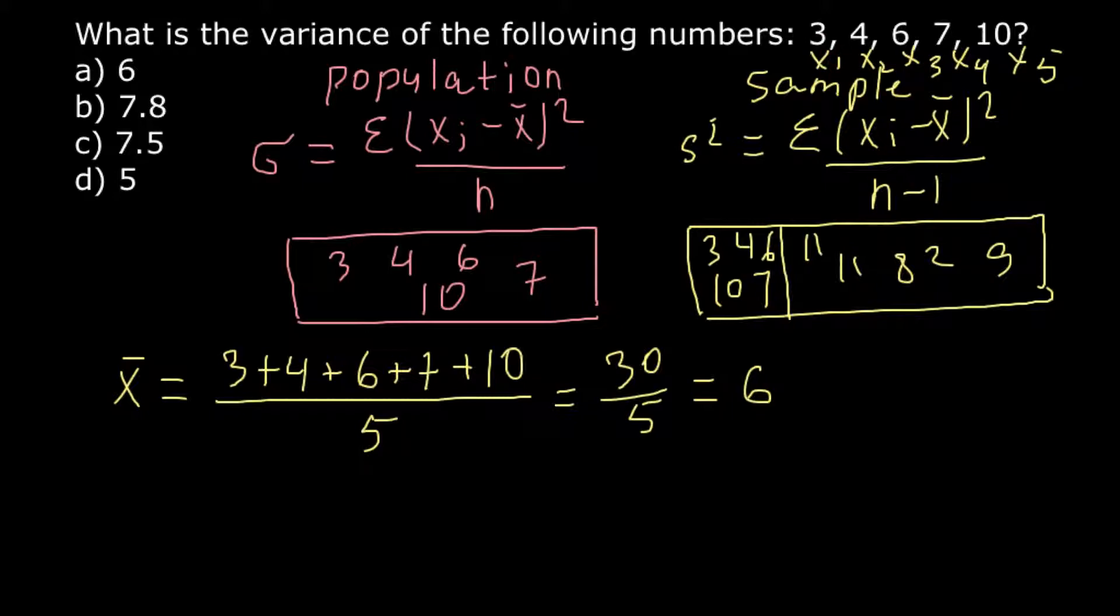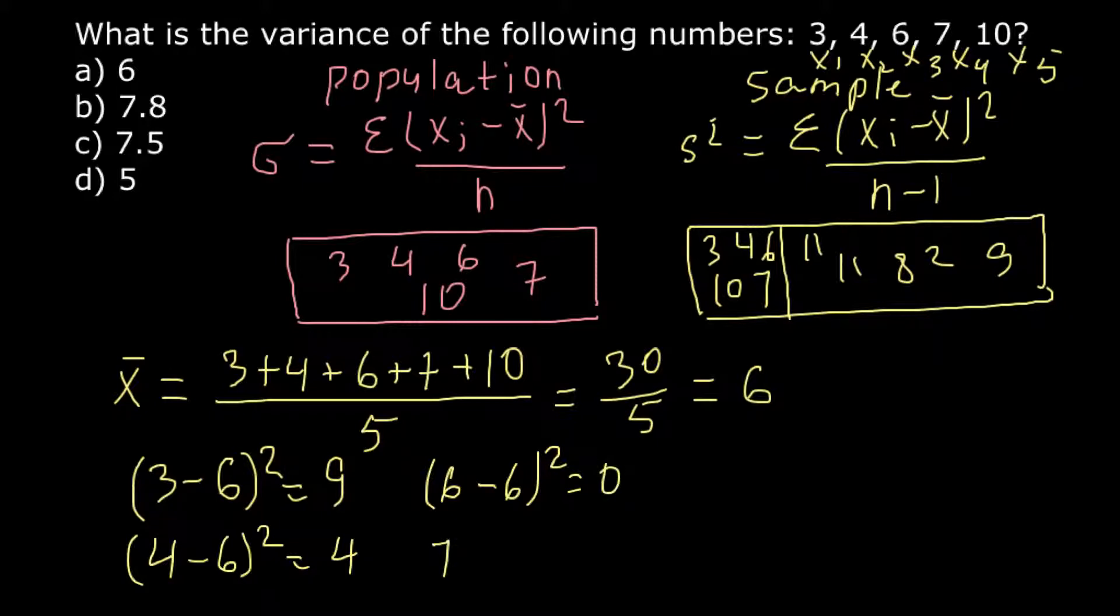What we do now, we have to find the difference of each number. 3 minus the mean that we found in our previous step: 3 minus 6 squared would be 9. Then 4 minus 6 squared would be 4. And next number is 6. 6 minus 6 squared would equal 0. And 7 minus 6 squared would equal 1. 10 minus 6 squared would equal 16.